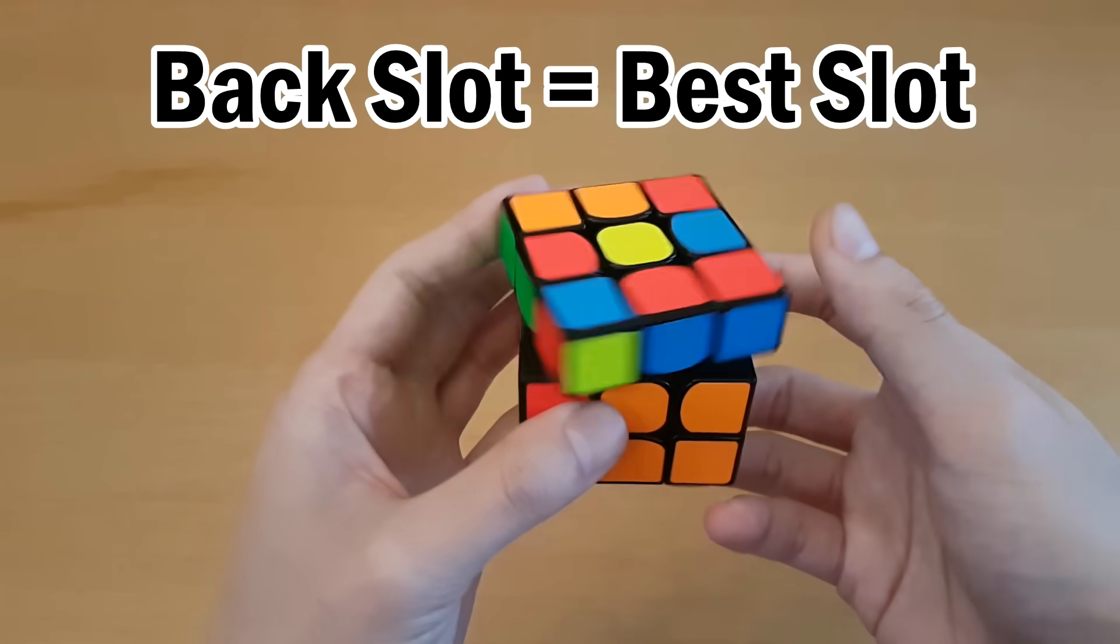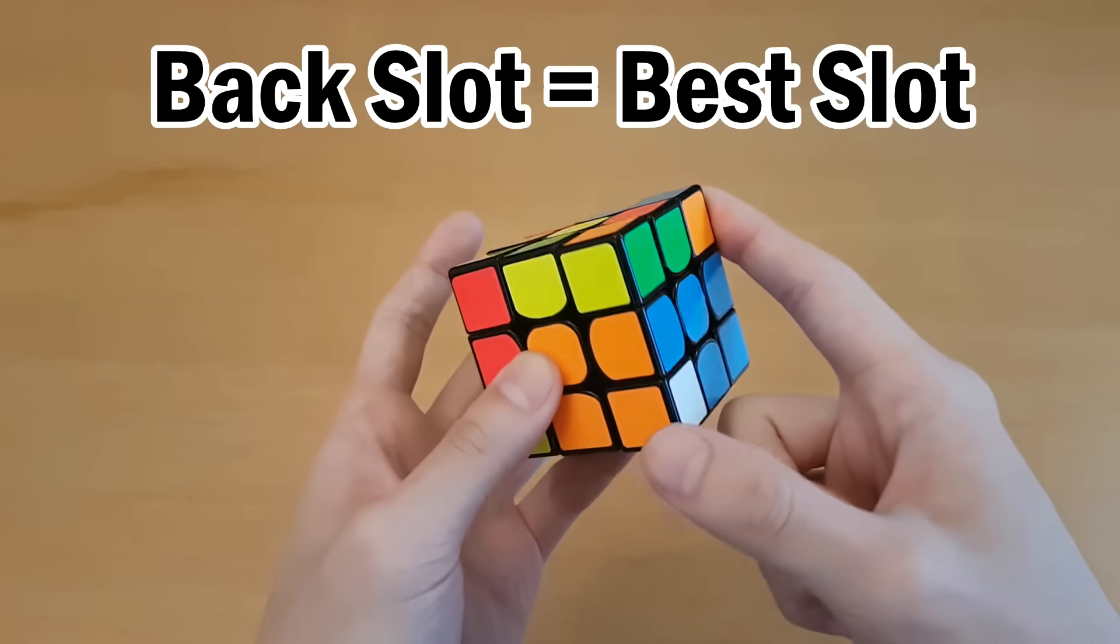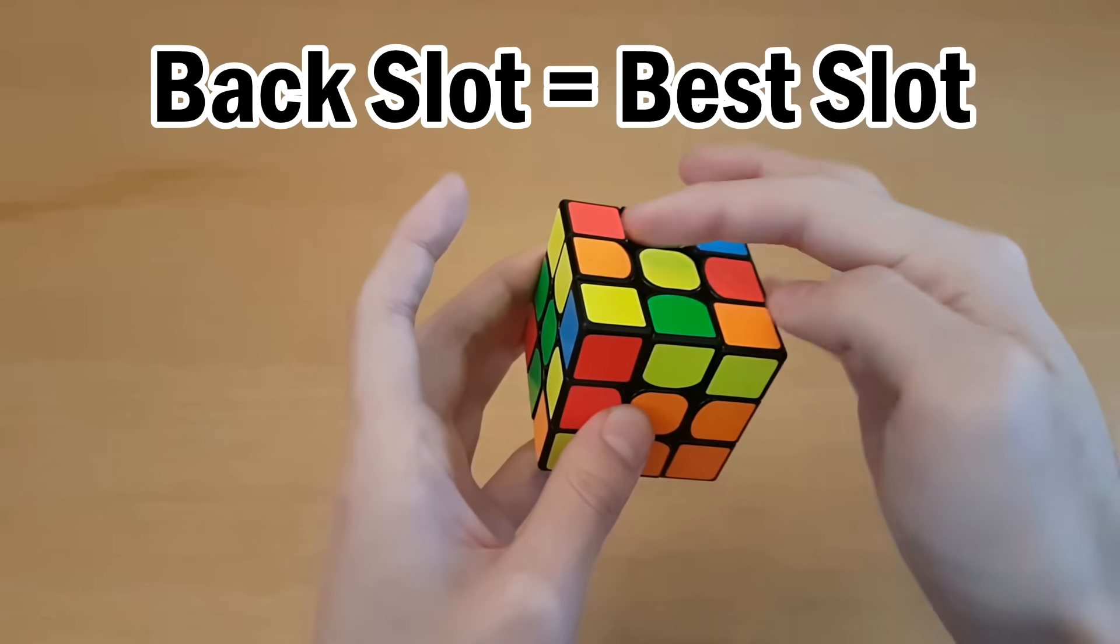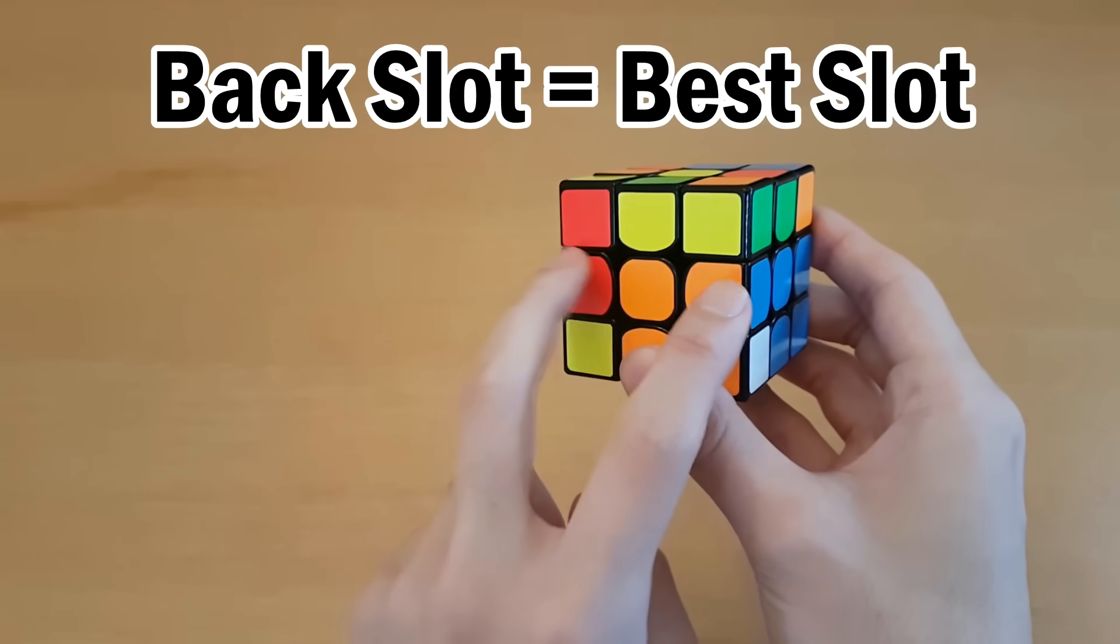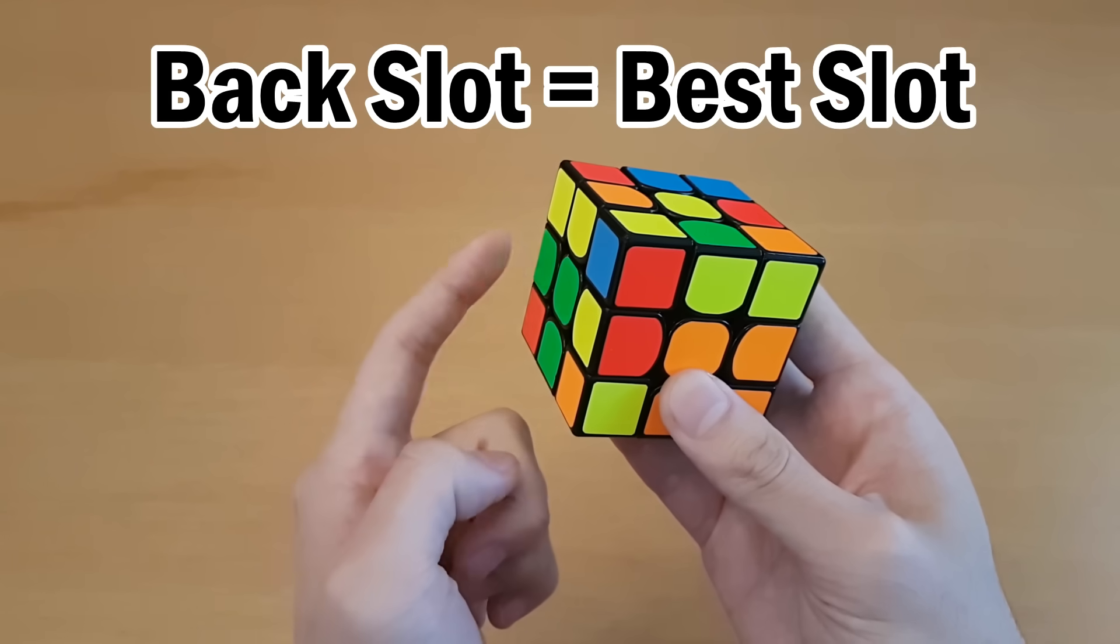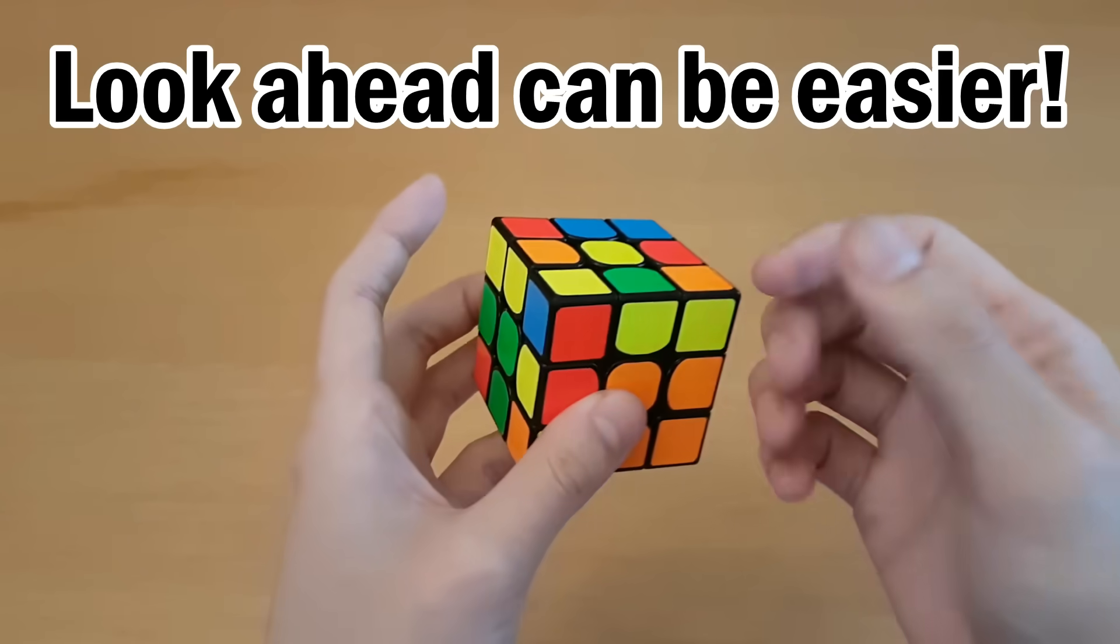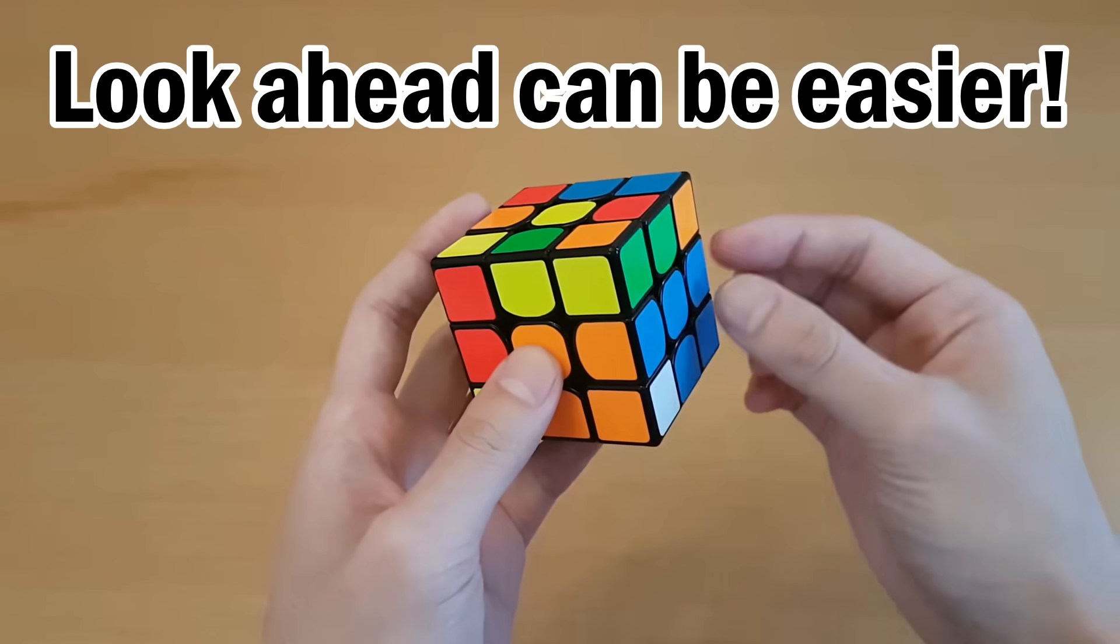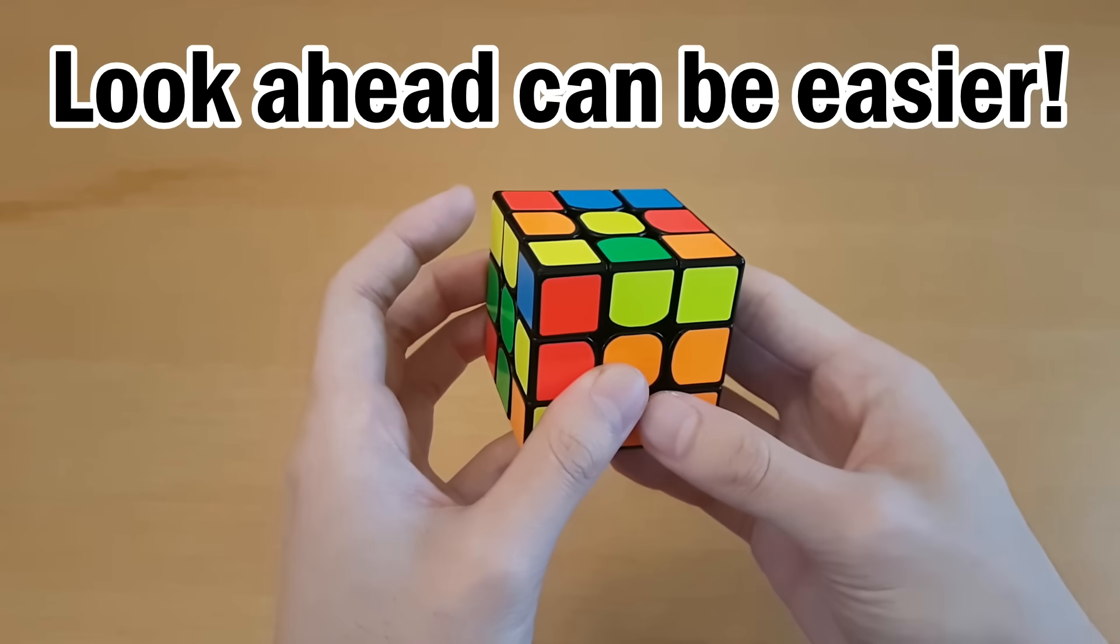Because when we insert it into the back slot, we have the same corner here now, but its edge could be anywhere in the top layer, of course, or it can be any of these two front slots. And if it's not there, then finally we look at the back slot, and there's only one spot remaining. So lookahead can be immensely easier if you just solve back slots earlier rather than later.